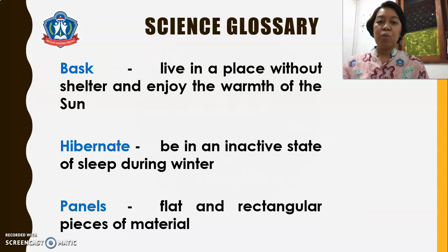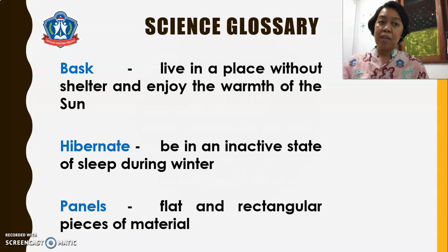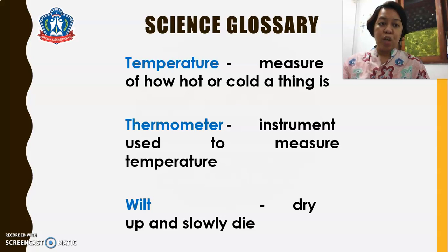For our science glossary in this unit, we have these following words. Bask means live in a place without shelter and enjoy the warmth of the sun. Hibernate means be in an inactive state of sleep during winter. Panels are flat and rectangular pieces of material. Temperature is the measure of how hot or cold a thing is. Thermometer is an instrument used to measure temperature. And wilt means dry up and slowly die.